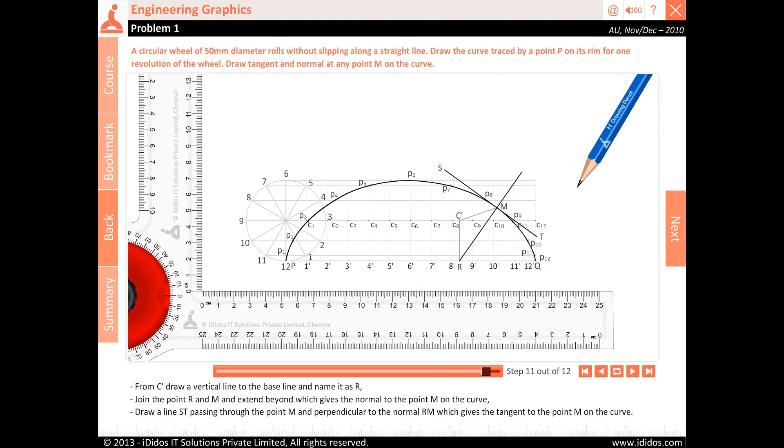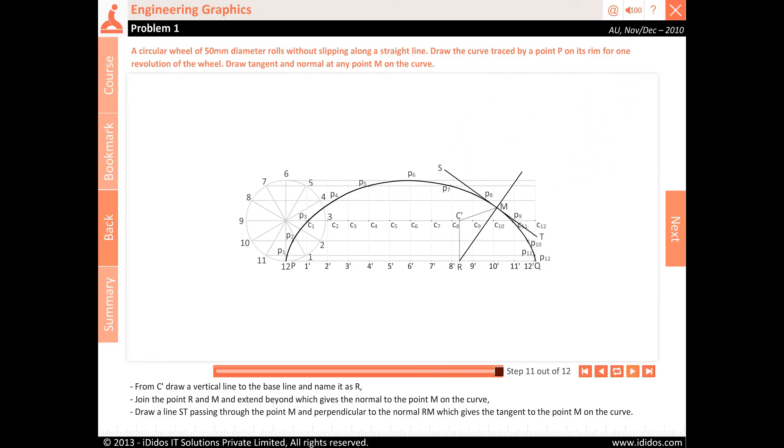Draw a line ST passing through the point M and perpendicular to the normal RM, which gives the tangent to the point M on the curve.